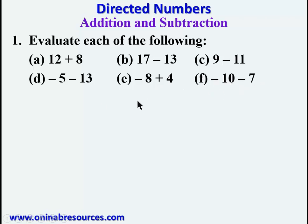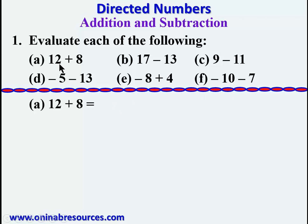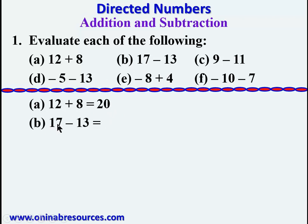Starting with part a, this is the addition we are familiar with: 12 plus 8. The unit 8 plus 2 makes 10, plus this 10 makes 20, so 12 plus 8 gives 20. Moving to part b: 17 minus 13. We add 4 to 13 to make 17, so 17 minus 13 gives 4.